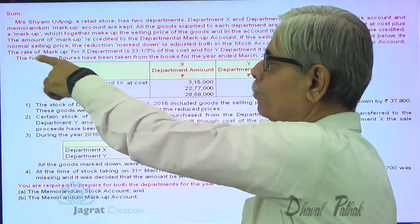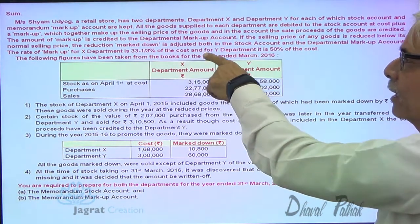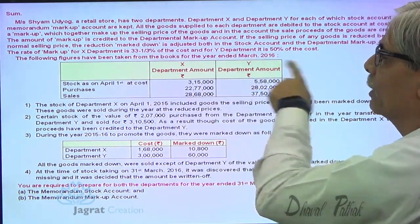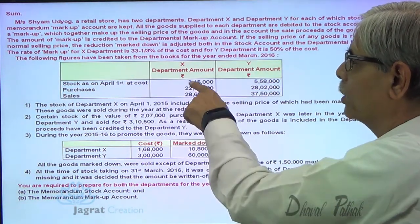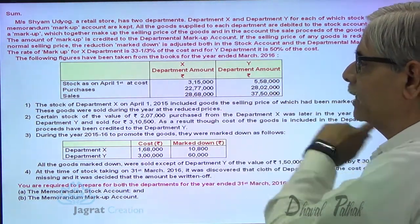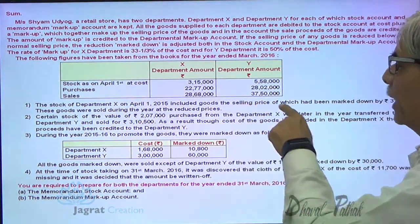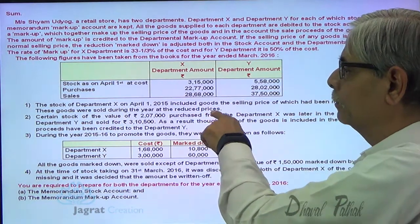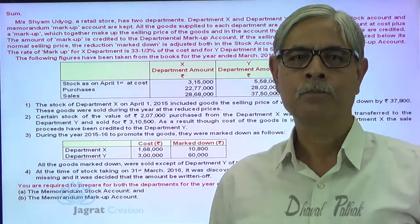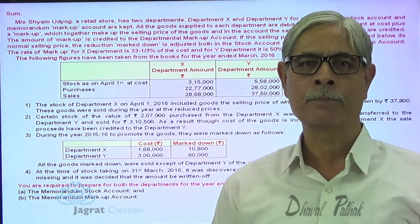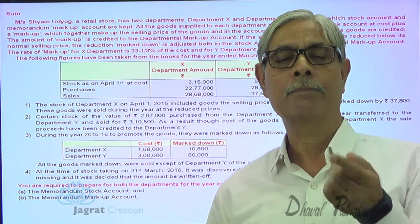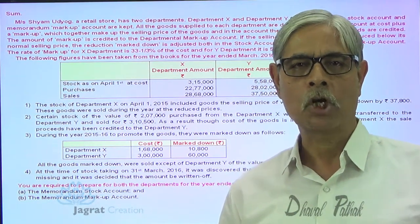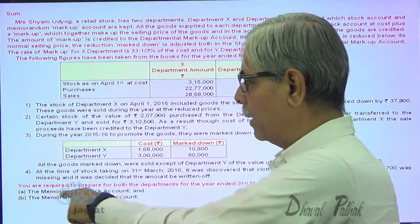The rate of markup for Department X is 33⅓% on cost and for Department Y it is 50% on cost. The following figures are taken from the books for the year ended 31st March 2016. The opening stock of Department X on 1st April 2015 — at selling price — included goods on which there was a markdown of 37,800. These goods were sold during the year at the reduced price. The opening balance of the memorandum stock account is: cost plus normal markup minus the markdown.